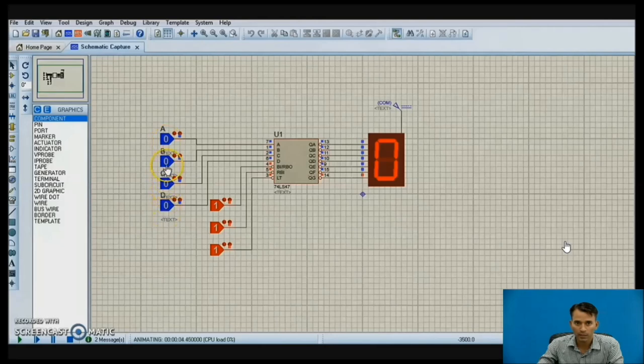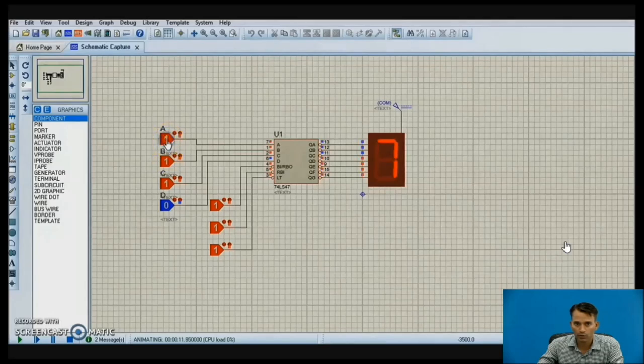D is MSB and A is LSB. When we click on the A, it is showing us 1, then 0010 shows 2, then 3. When C is 1, it is giving us 4. When it is 0, 1, 1, 0, it is showing 0, then showing the sequence through 7.